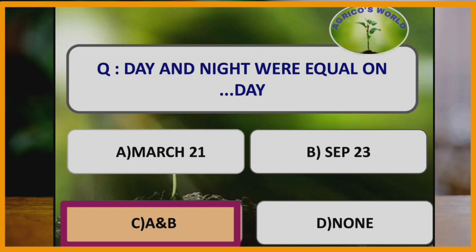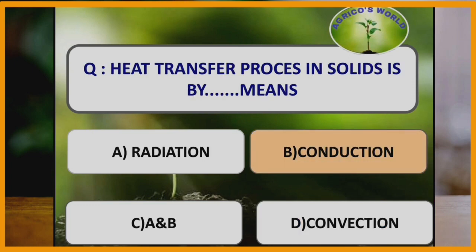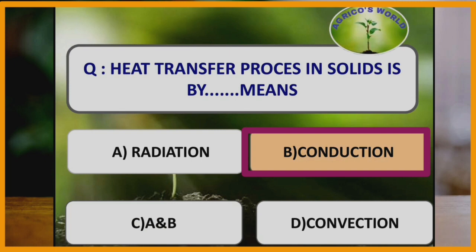Day and night are equal on March 21st and September 23rd — these are the days in which both day and night have equal length. 10,000 langley is equal to 3.47 mega joules. Langley is the oldest unit of measuring solar radiation. Heat transfer in solids is by the means of conduction, whereas in gases it is by radiation, and in liquids it is by convection.